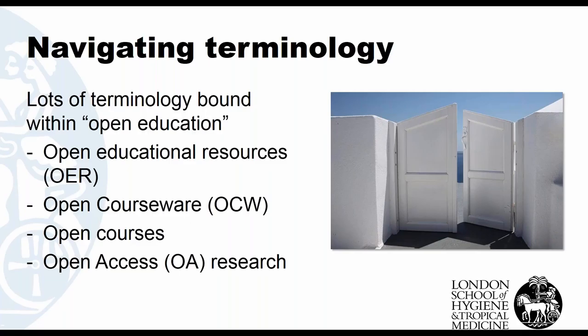What brings this varied terminology together is that open educational material tends to be freely accessible — openly licensed media that's valuable for learning, teaching, and assessment. But openness is itself quite a tricky term, and there can be varying degrees of open. A useful analogy is a door: it might be slightly ajar or propped open with a doorstop, but in either case it is open. That's undoubtedly true with open educational materials — particularly open courses, which might be free to study, but tasks like exams or buying a certificate might incur a fee, and that's where things get muddier.